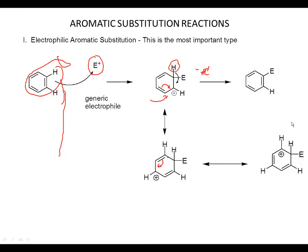Despite the greatness of this carbocation, there's something about it that really sucks as well — and that's how we got it. When we made this carbocation, what we did was we broke the aromaticity in a benzene ring. It's not aromatic. And because it's not aromatic, it is hard to form — much harder to form than the corresponding steps of electrophilic addition to an alkene usually. This step here is generally slow, and you can imagine this step — losing H plus — is actually very fast, because it regenerates a benzene ring.